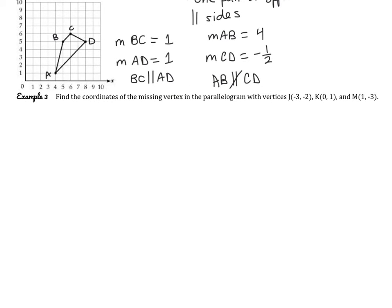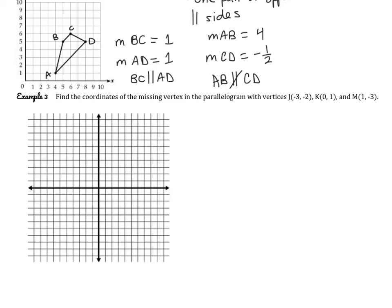Now let's look at example 3. Here we're asked to find the coordinates of the missing vertex in the parallelogram with vertices J, K, and M. A good approach is to plot out the points: J is at negative 3, negative 2; K is at 0, 1; and M is at 1, negative 3. If we connect those in order, we can see we're looking for a coordinate somewhere in that region.